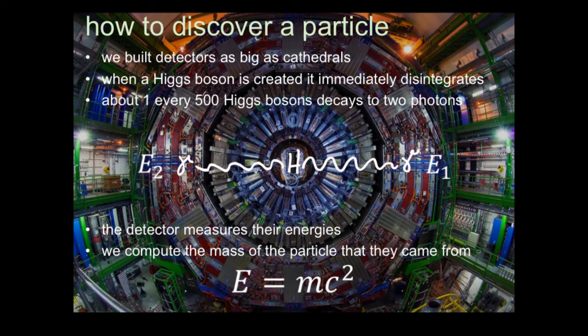A Higgs boson is roughly created once every two million collisions of protons. You measure the decay of a Higgs boson into two photons. Built inside this machine are detectors to detect these particles, and these detectors are as big as cathedrals — enormous. This is a picture of the inside of the actual detector — you can see the various floors with instrumentation, and a toolcase which gives you some idea of the scale.